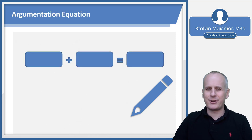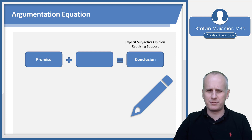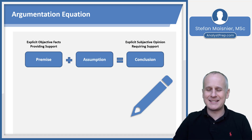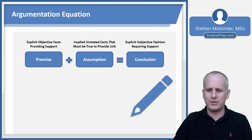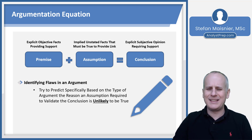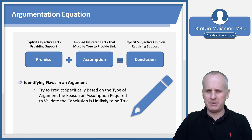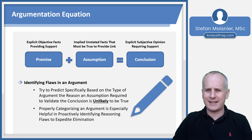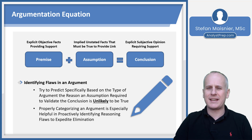The argumentation equation always finishes with a conclusion — the explicit subjective opinion that requires support. That support comes from the premise, which are the objective facts explicitly stated in the argument. The assumption is the set of unstated facts that must be true to logically link the premise to the conclusion. To identify flaws, you specifically identify the common argument type and state why an assumption is unlikely to be true — that's why properly categorizing an argument is especially helpful for expediting your elimination process.